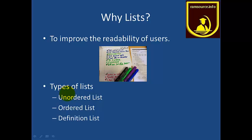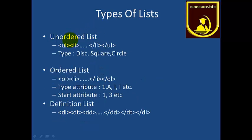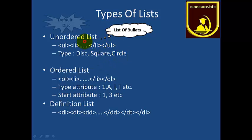In HTML, there are three types of lists. One is unordered list, next is ordered list, and then definition list. The unordered list is a list of bullets. The syntax uses the ul tag for unordered list, and inside that, the li tag indicates each list item. The symbols for unordered list are disc, square, and circle. The default unordered list symbol is disc.